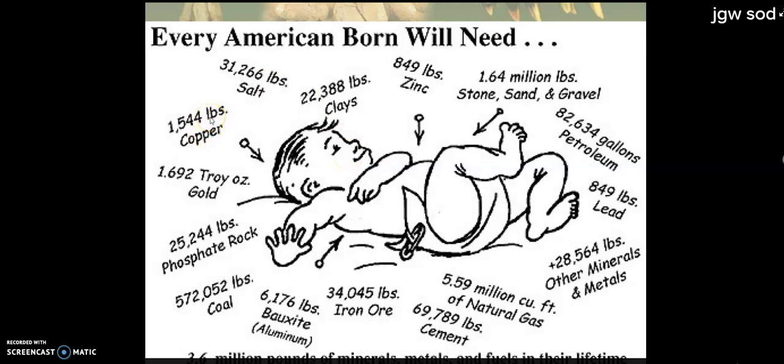1,500 pounds of copper. Some of that is pennies, but a good amount of that is also the copper wiring in your house and copper pipes in your home. 1.692 troy ounces of gold. Quite a bit of gold. Much of that is in electronics, and some of it you wear on your neck. Phosphate rock. We find that in detergent. We also find that in fertilizers. So there are many, many things we pull out of the ground.